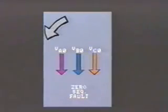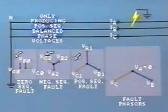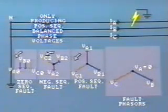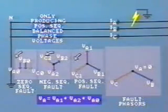Another interesting factor becomes apparent. The V0 components in each of the phases are of identical magnitude and all are at the same phase angle. In fact, these voltage components have no sequence at all — so they are called zero sequence components. To review, to get each phase voltage at the fault, we add the three components together. For example, VA equals VA1 plus VA2 plus VA0.